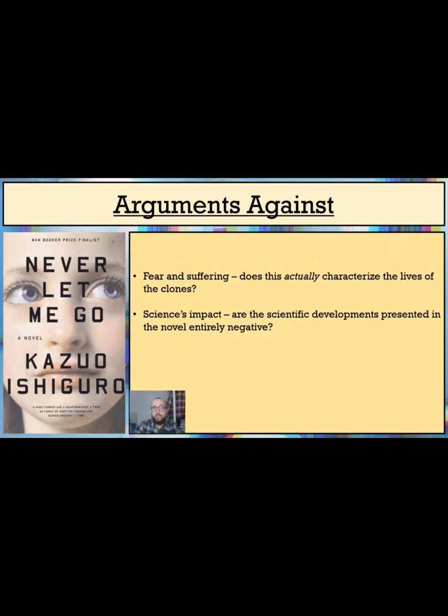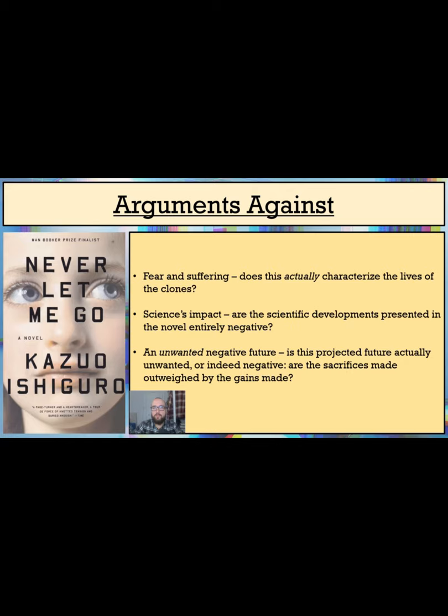Last of all, I want to revisit the comment made by Claeys that dystopias project negative futures we do not want but may get anyway. In the case of Never Let Me Go, I agree that a realistic projection of human society is made. Writing in the early 2000s, it is likely that Ishiguro drew upon recent scientific developments, such as the cloning of Dolly the sheep in 1996, the first successful mammal clone produced.